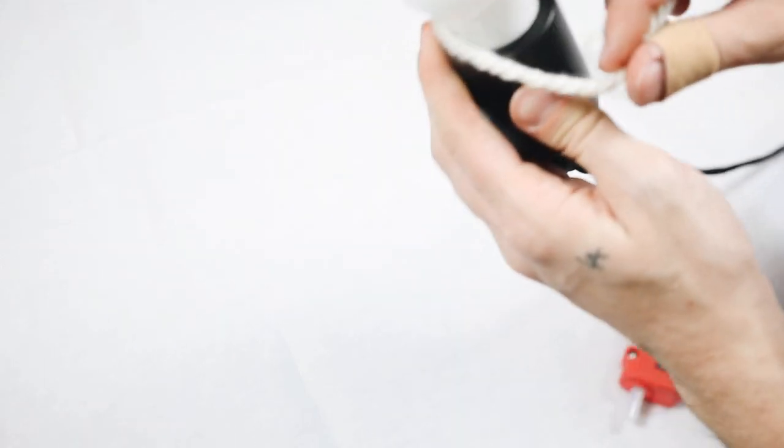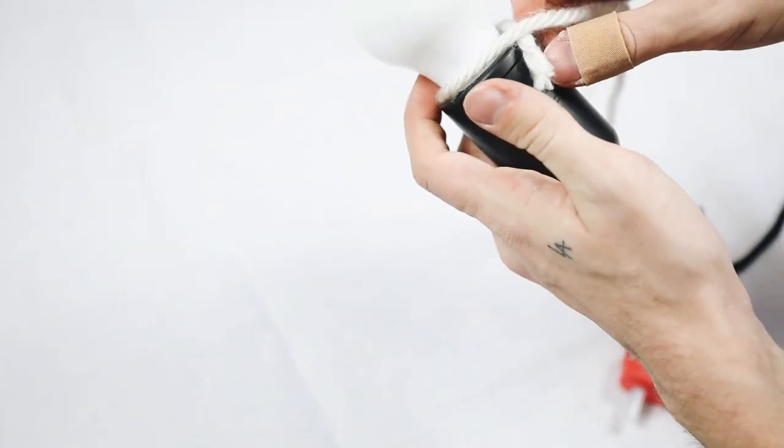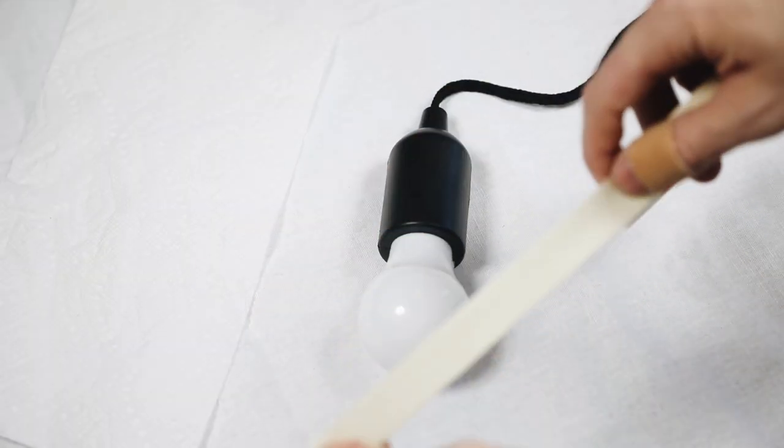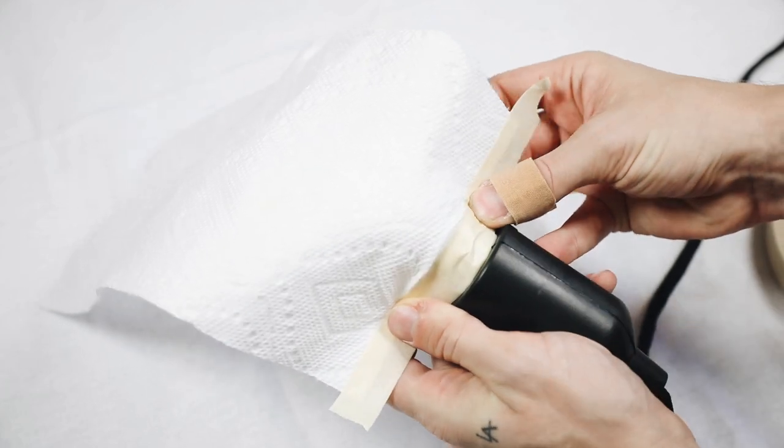And then basically what you do is you pull the string and the light bulb lights up. And this light isn't super bright, but I tested it at nighttime, and it's like a perfect reading light. So if you were to have it by your bed or something, it's a great thing to just pull on and basically read with, or whatever you want to do with it.